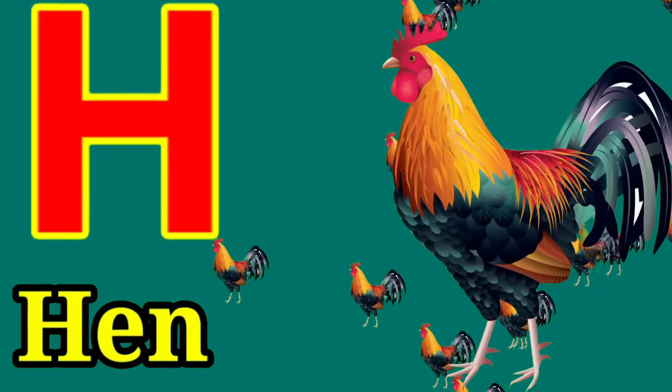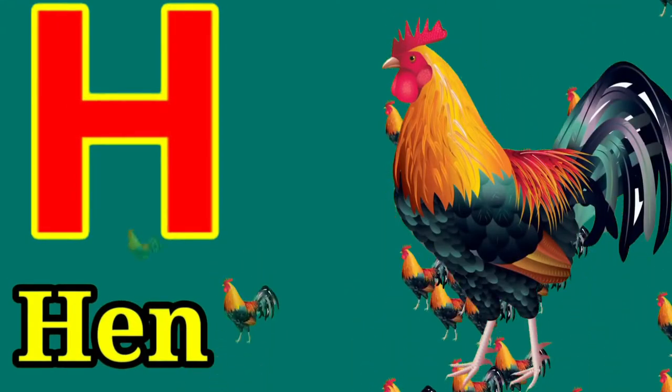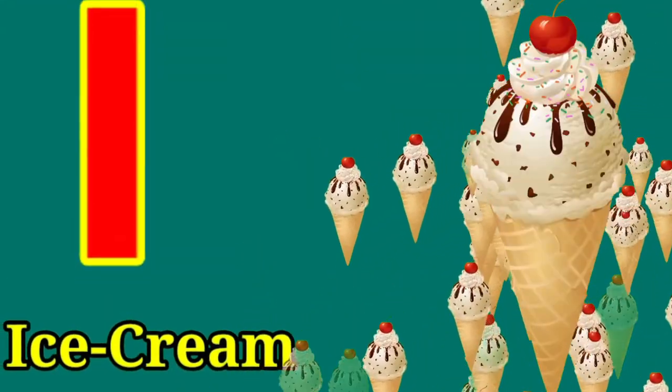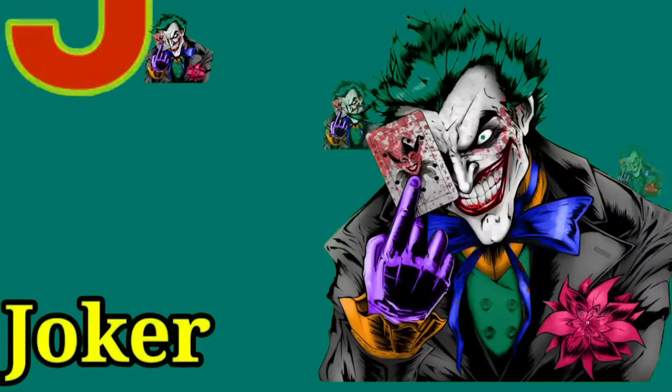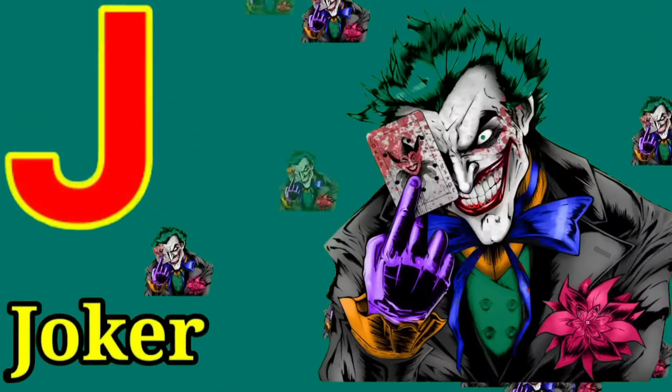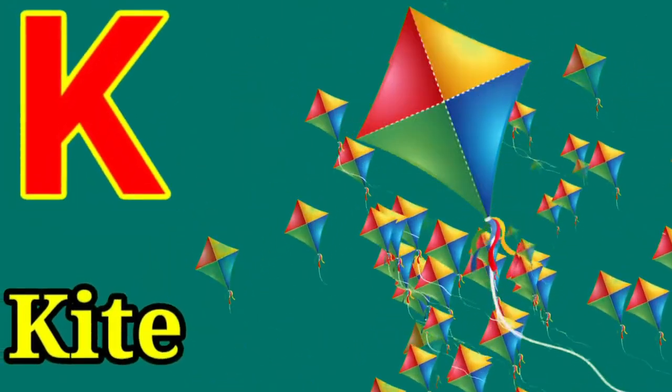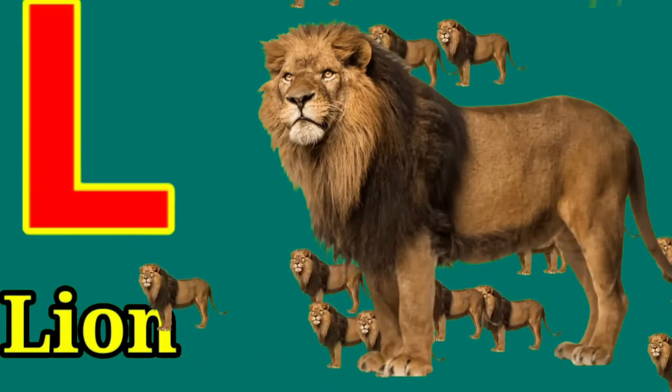H for hen, I for ice cream, J for joker, K for kite, L for lion.